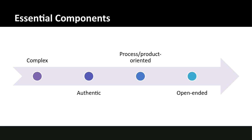Some essential components of performance-based assessment are that they're complex, authentic, and either process- or product-oriented and open-ended. If it's a process-oriented assessment, it may be less open-ended — for example, in a science lab where students need to go through a specific process, there's not a lot of open-endedness. Whereas something more creative, like composing a piece of music in a music course, would be product-oriented and more open-ended. It depends on the goals of that assessment.